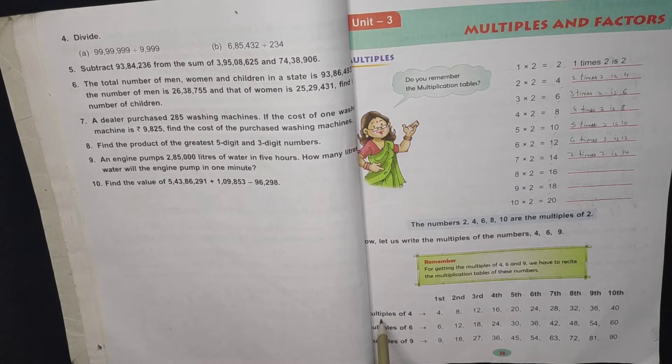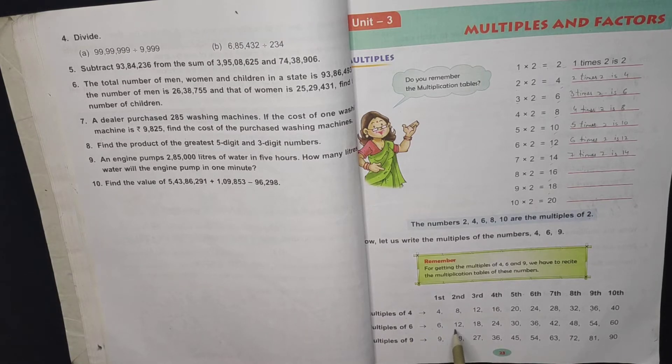For example, multiples of 4: 4, 8, 12, 16, 20, 24. This is all the table of 4. Multiples of 6: 6 multiplied with 1, then 2, then 3, then 4. 6 multiplied with different numbers. The numbers we have, these are all the multiples.